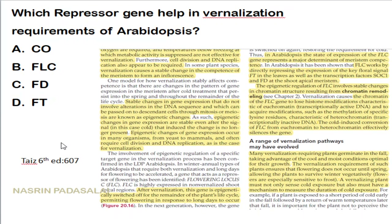Which gene helps in the process of vernalization requirement in Arabidopsis? The correct answer is FLC (Flowering Locus C), found on page 607, sixth edition. FLC is a repressor of flowering and is highly expressed in non-vernalized shoot apical regions. After vernalization, the FLC gene is switched off — when FLC is expressed, that region will not produce flowers.